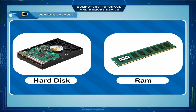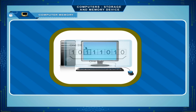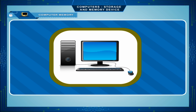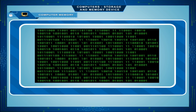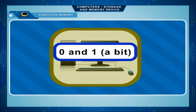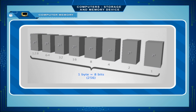Computer memory is measured in terms of bytes. One byte is capable of holding one character. Each piece of information is represented within the computer memory using binary digits 0 and 1, called a bit. A combination of 8 bits makes a byte.